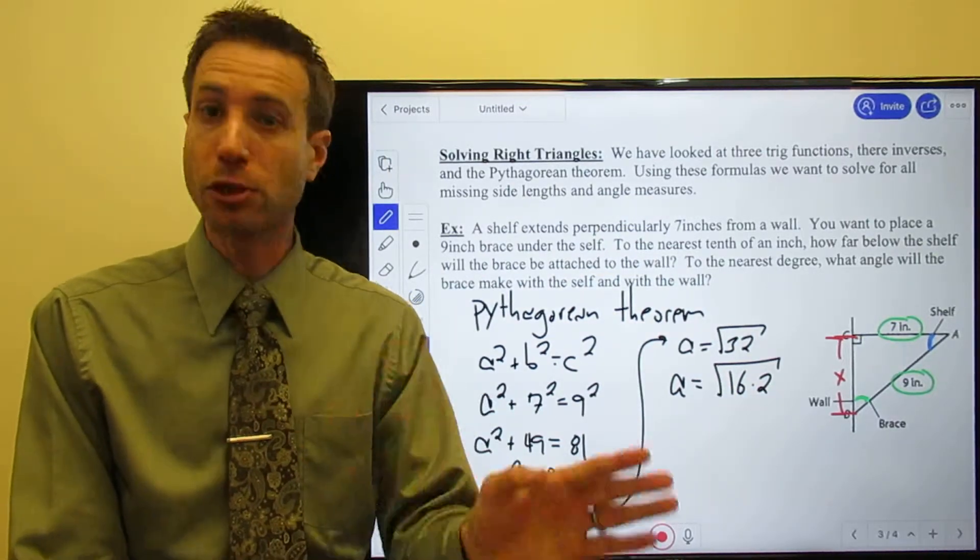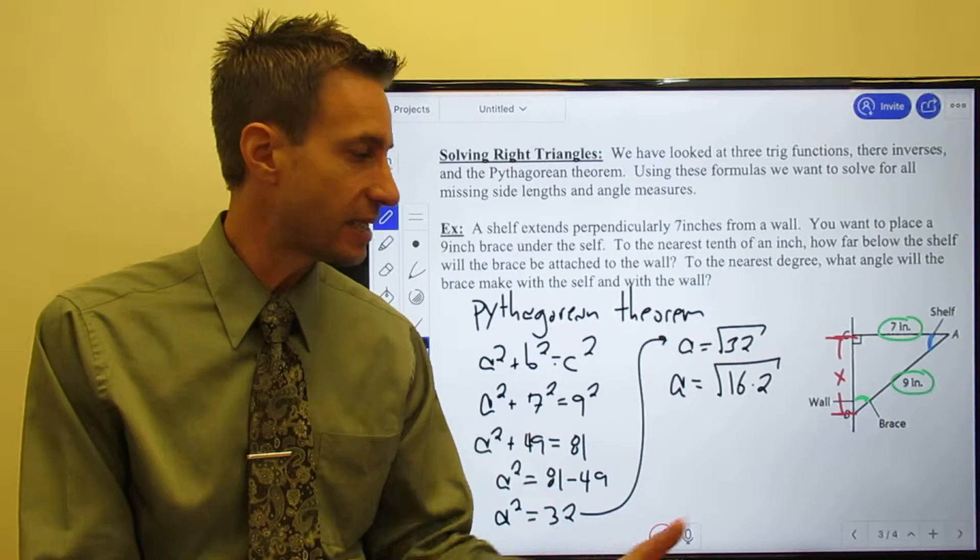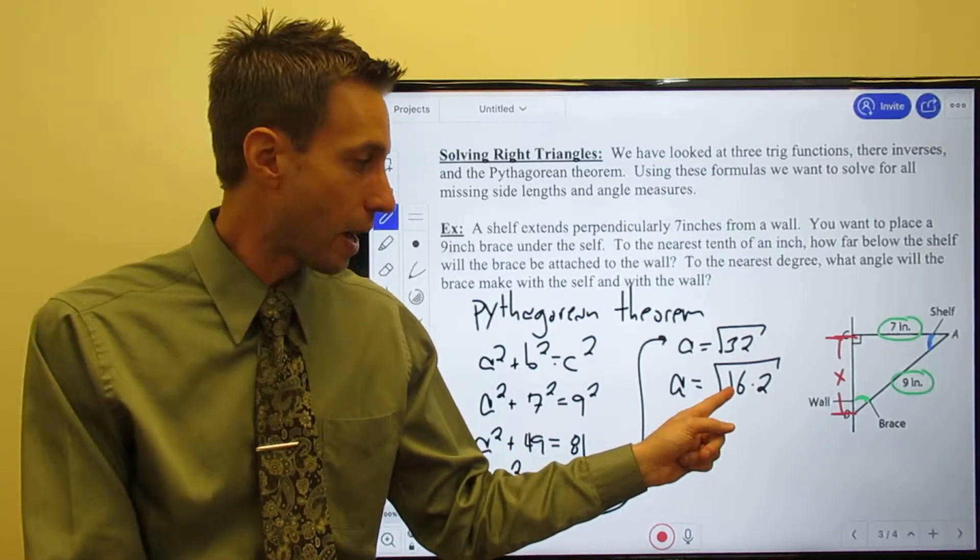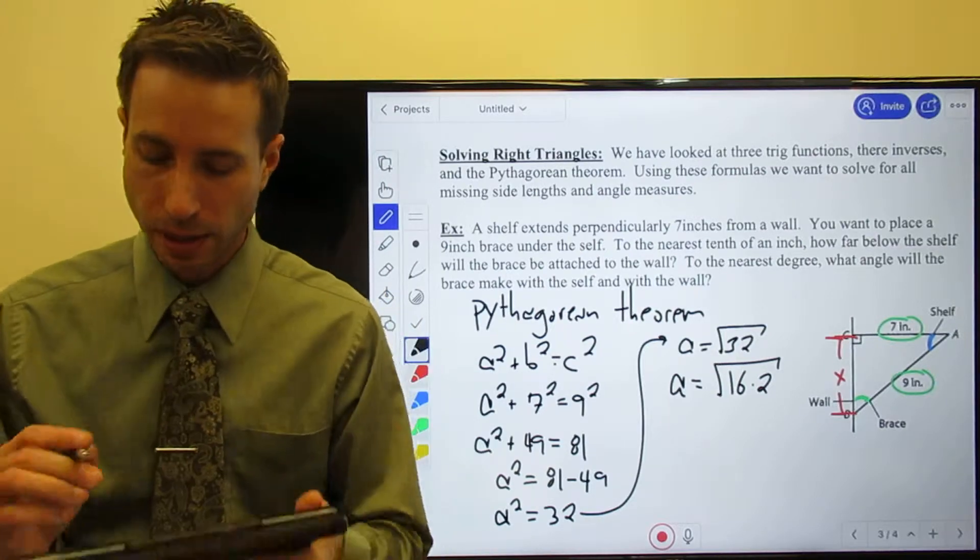Are there other ways to multiply to 32 besides 16 and 2? Absolutely. There are other ways to get to 32. The reason I chose this one is because 16 is a perfect square. I take the square root of 16, I get 4.